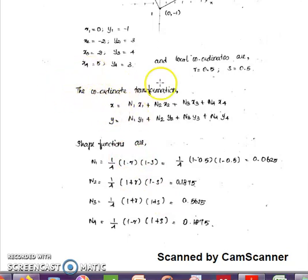The coordinate transformation general formula is x = N1*x1 + N2*x2 + N3*x3 + N4*x4, and similarly for the y coordinate system. Here x1, x2, x3, x4 are the Cartesian coordinates. R and S are the local coordinate system.